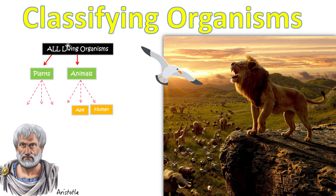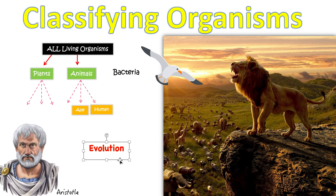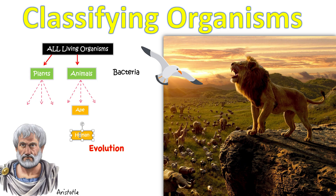So what's wrong with his way? It's okay, but there are some things wrong with it. For example, he did not know about bacteria. In reality there should be another category for these microorganisms that we cannot see with our eyes — but of course, we can't blame him. Another problem is that he didn't consider evolution. We know that some animals evolved from other animals — for example, a human should rather be seen as evolved from an ape, not placed in a completely separate category.